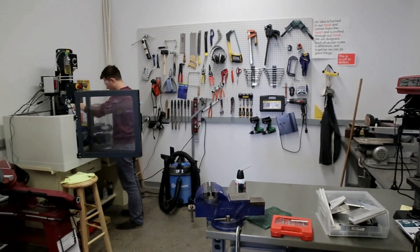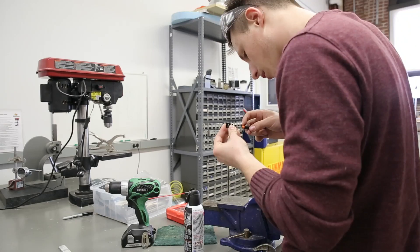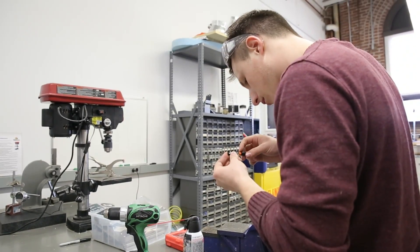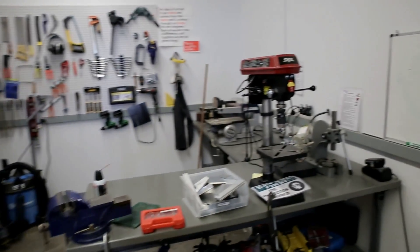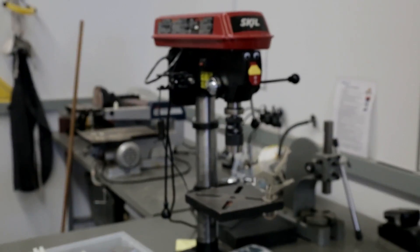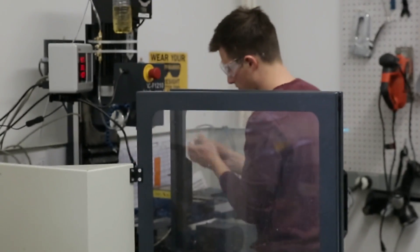This is our prototyping shop. We have a laser cutter, we have a mill. We have all the good toys that you need to make pretty much anything you want. So this is where a lot of our R&D takes place. Trying out new things, things that can improve the Form 1.